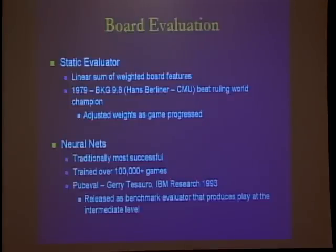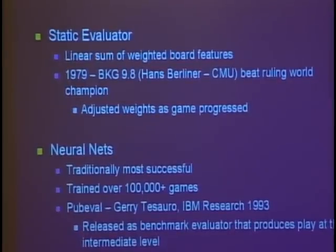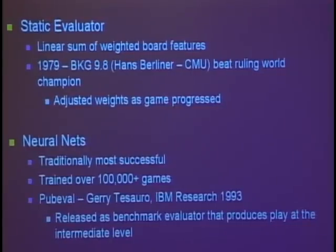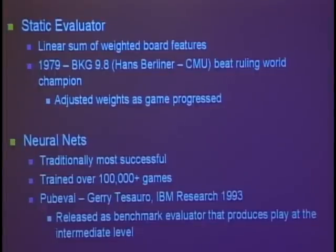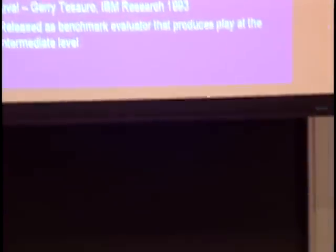The two basic kinds of board evaluation are the static evaluator and a neural net. The static evaluator works by looking at features of the board, creating a score based on each feature, multiplying it by a weight based on how important that feature is, and summing them up. A program like this was created by Hans Berliner at CMU in 1979 — it was the first program to beat a ruling world champion. One important feature was that it adjusted the weights as the game went on, because certain features became less important as the game progressed and others became more important.